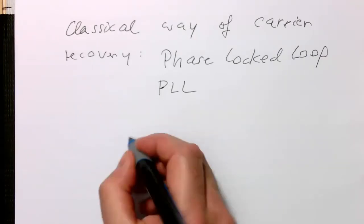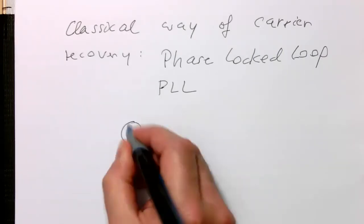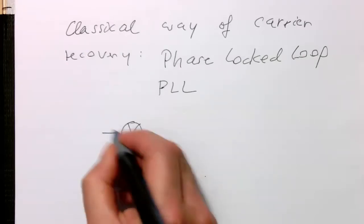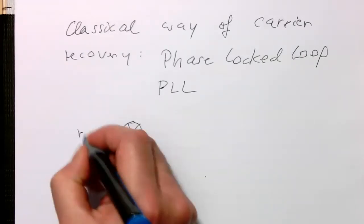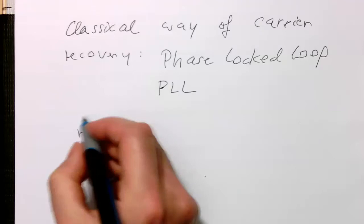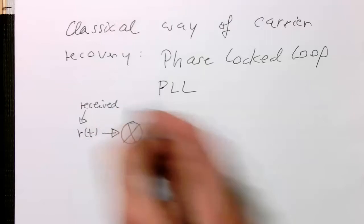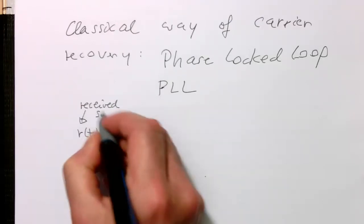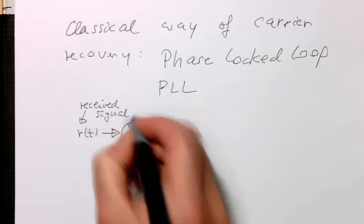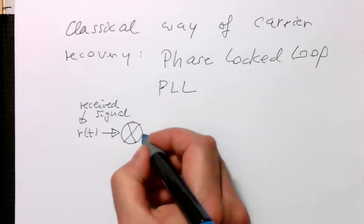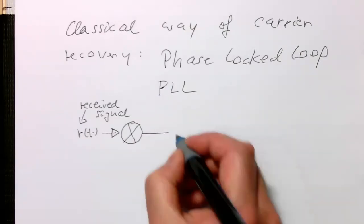We've got here a multiplier unit, and this is our signal R, the received signal. This is then low-pass filtered.